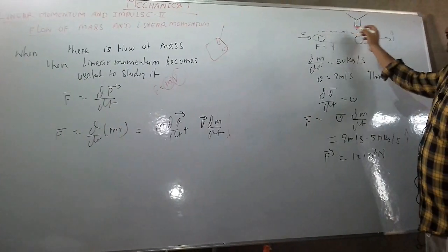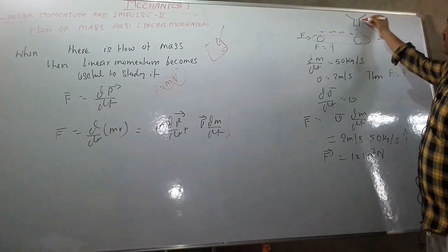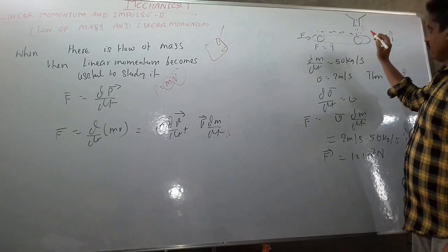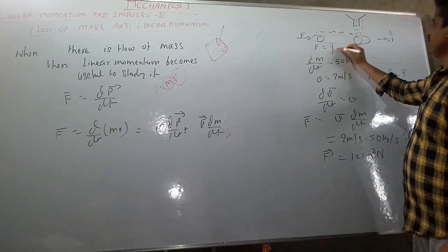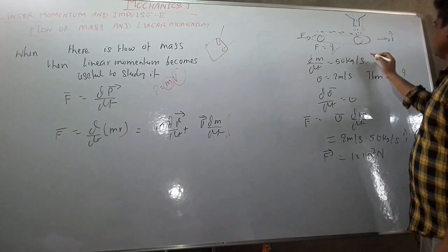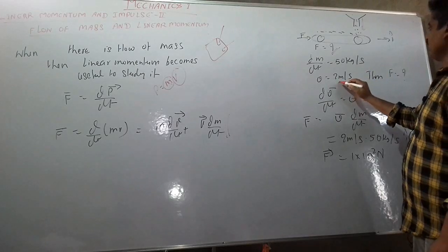Here is the conveyor belt. On the conveyor belt there is mass pouring on it. We have to find the force so that the whole belt keeps running at the velocity 2 meter per second.